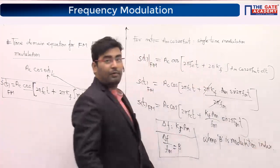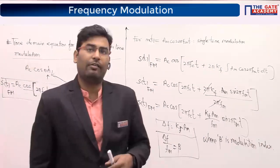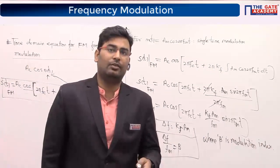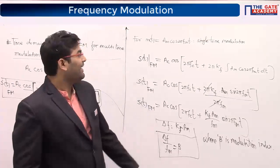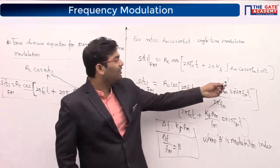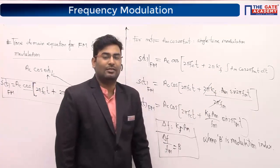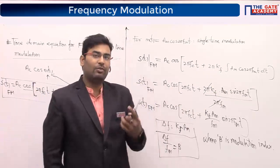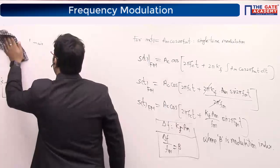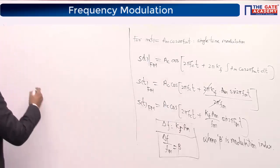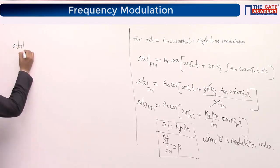Single-tone FM contains only one frequency fm. Beta is the modulation index in FM. The final equation is s(t)_FM = Ac·cos[2πfct + β·sin(2πfm·t)], where β = Kf·Am/fm = ΔF/fm. Please keep this formula in mind at all times.